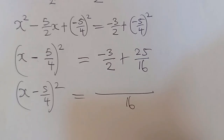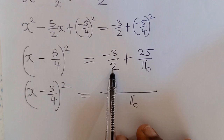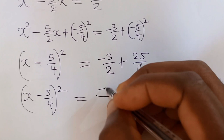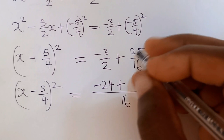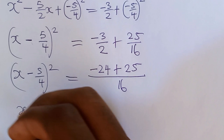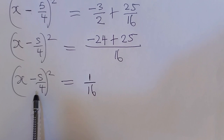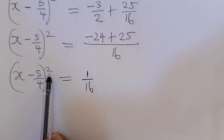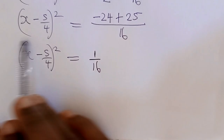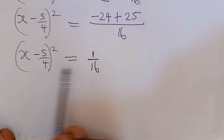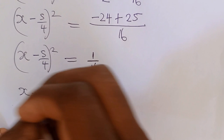So we have (x - 5/4)² = -3/2 + 25/16. Finding the LCM of 16: that gives us -24/16 + 25/16 = 1/16. So (x - 5/4)² = 1/16. To remove the square, we take the square root of both sides, giving us x - 5/4 = ±√(1/16).